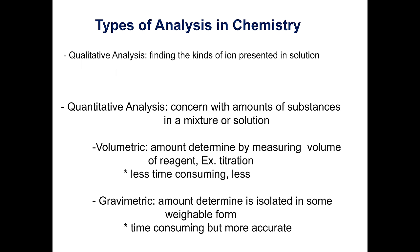In dealing with the analysis of phosphorus in fertilizer, we're looking at a new type of analysis. Over the last few labs we've done qualitative analysis — recording observations from reactions — and quantitative analysis including volumetric analysis during titrations. With this part of the lab, we're doing gravimetric analysis, where we try to get a product isolated and in a weighable form. This is a very time-consuming process, so you must do each step right to get the correct mass of product.